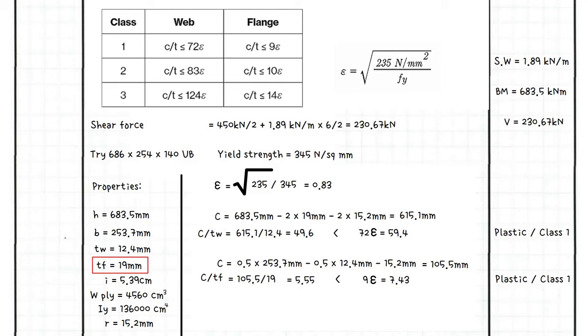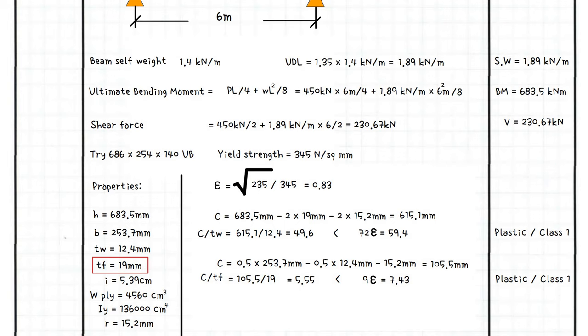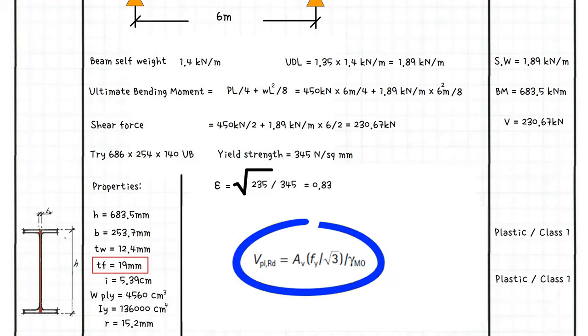Next, we need to check the shear resistance. In the case of Class 1 and 2 rolled steel beams, the design shear resistance is the cross-sectional area of the part of the beam that is resisting shear, which is the cross-sectional area of the web and the thickness of the flange, times the yield strength of the steel divided by the square root of 3 divided by the partial factor for the resistance of cross-section, which in the UK is set at 1.